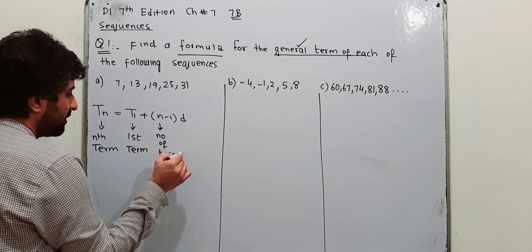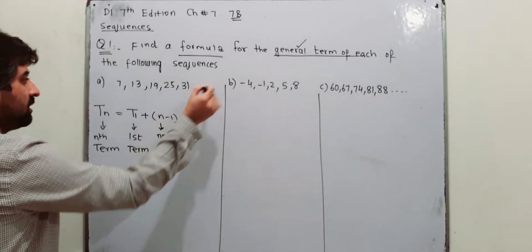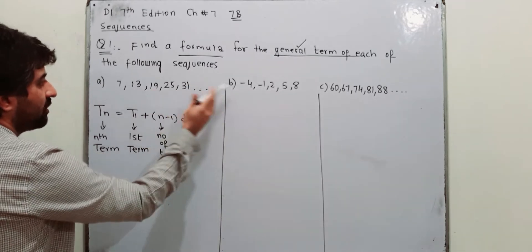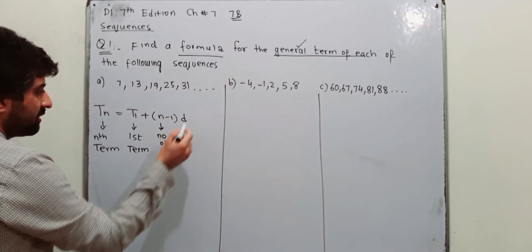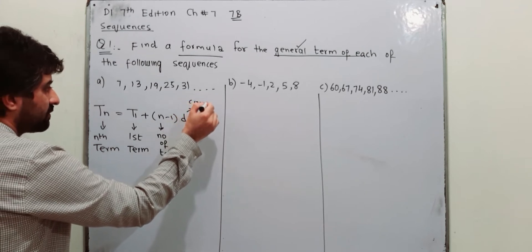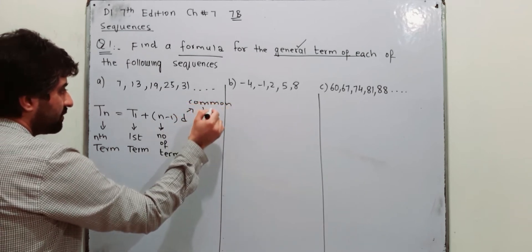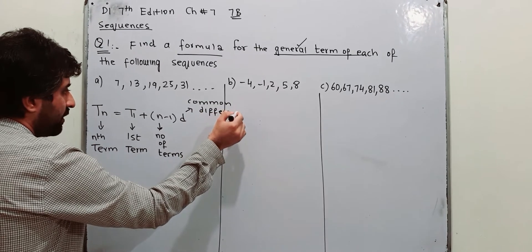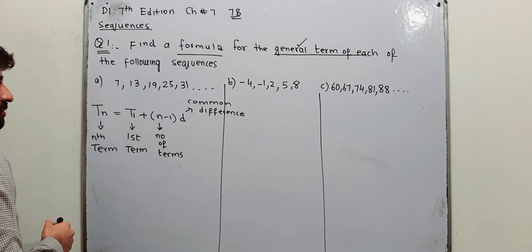How many terms are there in your sequence? Actually this is infinite — those dots mean it is infinite. And D is a very important one: it is the common difference. I will explain all of these terms one by one.